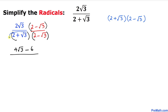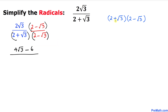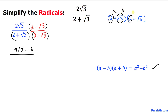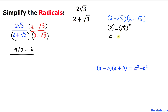Now let's focus on the denominator. We can see that these two factors represent the product of a sum and a difference. Therefore we use the formula: (a + b)(a − b) = a² − b². In our case, a is 2 and b is square root of 3. So this becomes 2 squared minus the square of square root of 3, which is 4 minus 3, giving us 1.